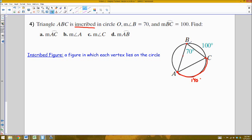I know that arc BC is 100, which means that the angle inscribed within that arc would have to be half that, which makes it 50 degrees.